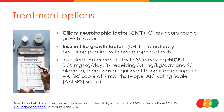Other available treatment options include ciliary neurotrophic factor — a growth factor — and insulin-like growth factor. These neurotrophic factors are shown to promote motor neuron survival in cell cultures, particularly in rodents. Studies in wobbler mice demonstrate a slowing of disease progression and improvement in muscle strength, identified across several randomized controlled trials.